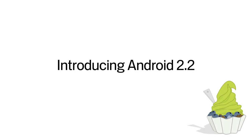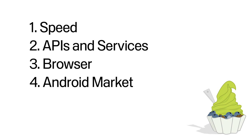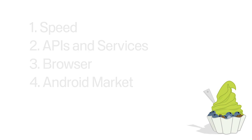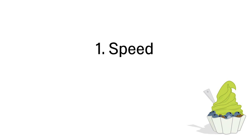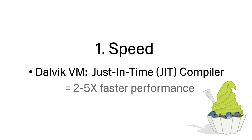We are pleased to announce Android 2.2. There are four areas we'd like to highlight in this video. We're working to continue improving overall speed and performance on Android. In Android 2.2, the newly introduced Dalvik JIT compiler delivers a 2-5x performance boost to CPU-bound code compared to Android 2.1.